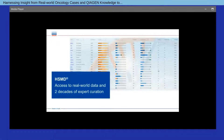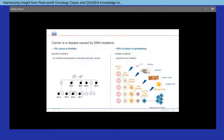Thank you so much for the nice introduction and thank you all for attending today. Kaigen's curated knowledge can be used for many purposes; however, we have particularly deep curation in the area of cancer research. Cancer is a disease caused by mutations. While the majority of cancer is caused by spontaneous or somatic mutations, many cancer-relevant or cancer-associated variants can also be inherited.